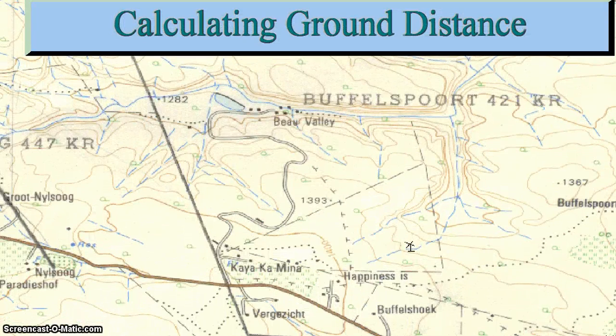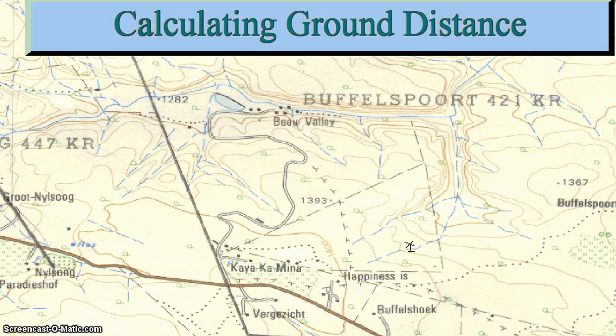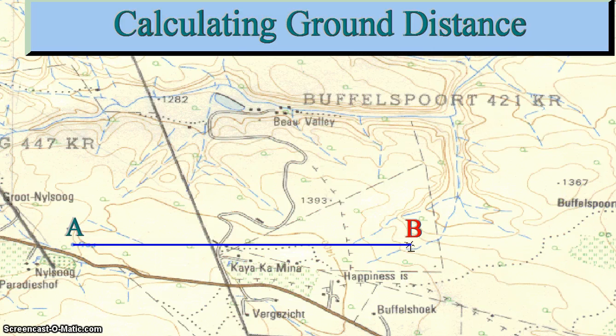To calculate the ground distance in kilometers from the reservoir at A to the windmill at B, join the two points with a straight line. Measure the distance in centimeters.